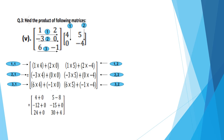Multiplying the numbers: 1 into 4 is 4, 2 into 0 is 0; 1 into 5 is 5, 2 into minus 4 is minus 8. Second row: minus 3 into 4 is minus 12, plus 0 times 0 is 0; minus 3 times 5 is minus 15, plus 0 times minus 4 is 0. Third row: 6 times 4 is 24, plus minus 1 times 0 is 0; 6 times 5 is 30, plus minus 1 times minus 4 is plus 4. Adding products: 4, minus 3, minus 12, minus 15, 24, and 34.